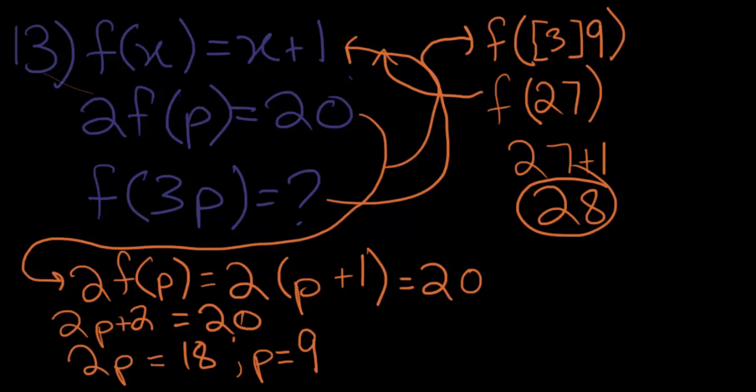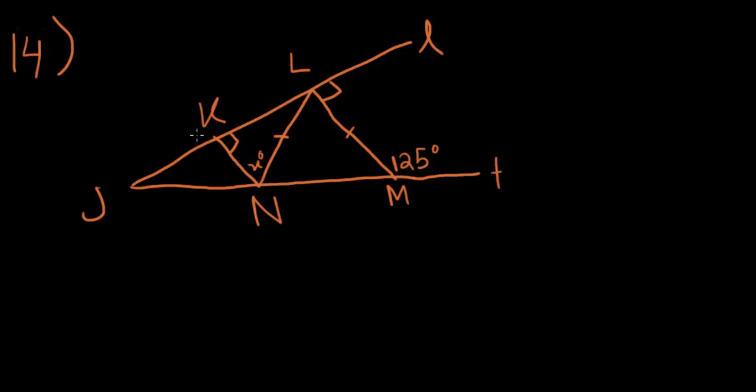And now, we'll finally do number 14, the actual number 14. In the figure above, line KN is perpendicular to line JL and line LM is perpendicular to line JL. If the lengths of line LN and LM are equal, what is the value of x? Okay. So, here's another angle game to play, which is really fun, actually. So, it tells us that line LN and line LM are the same. And that creates a triangle between lines LN, LM and MN. And this is, then, an isosceles triangle.